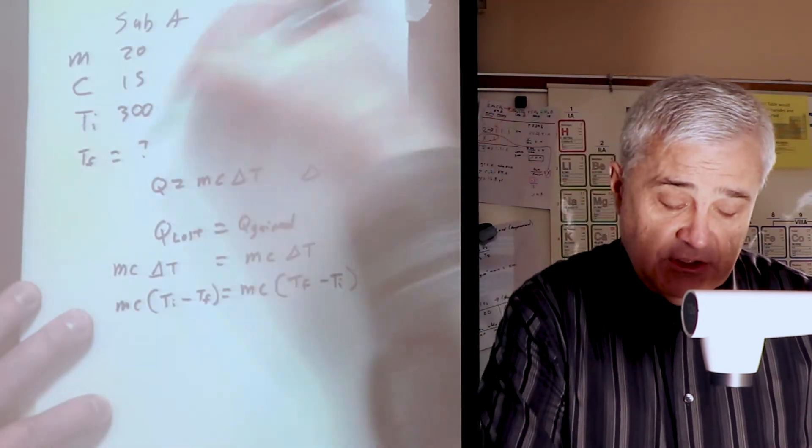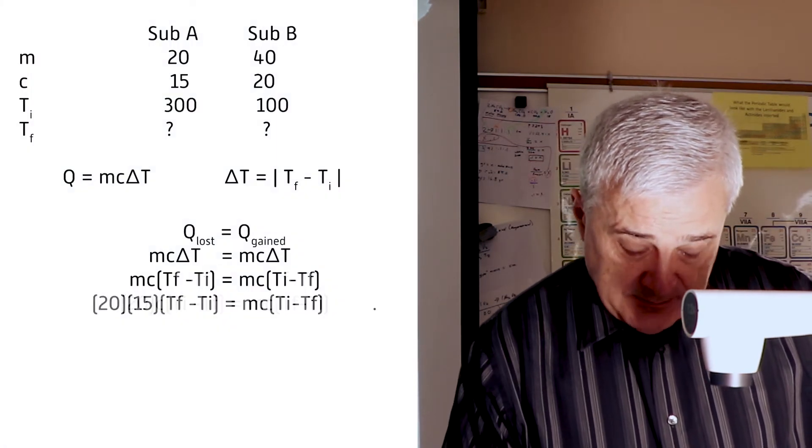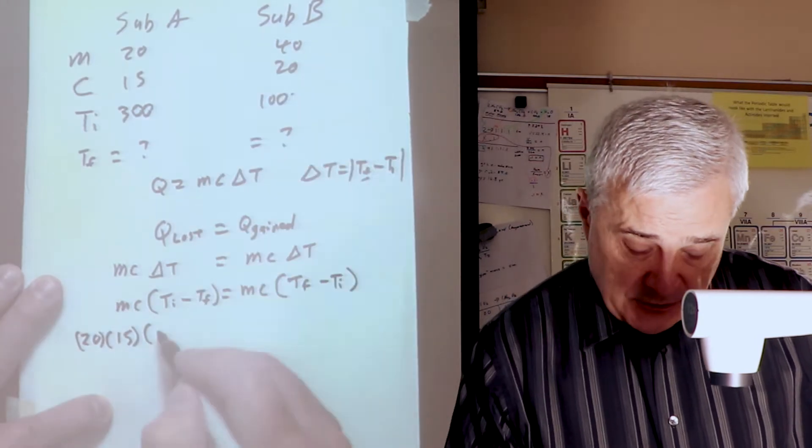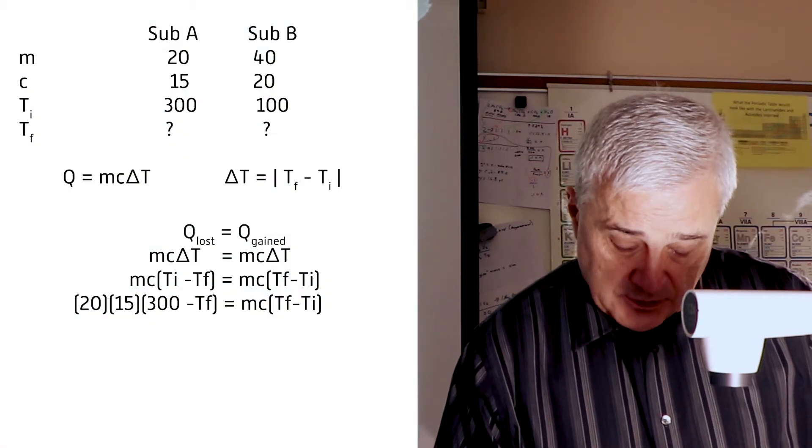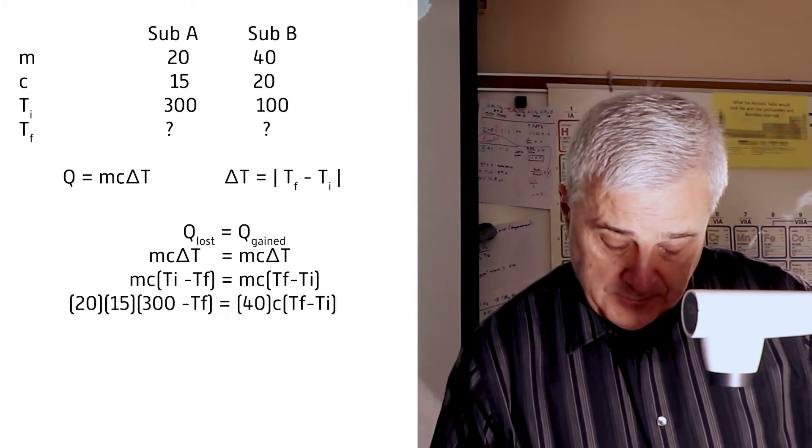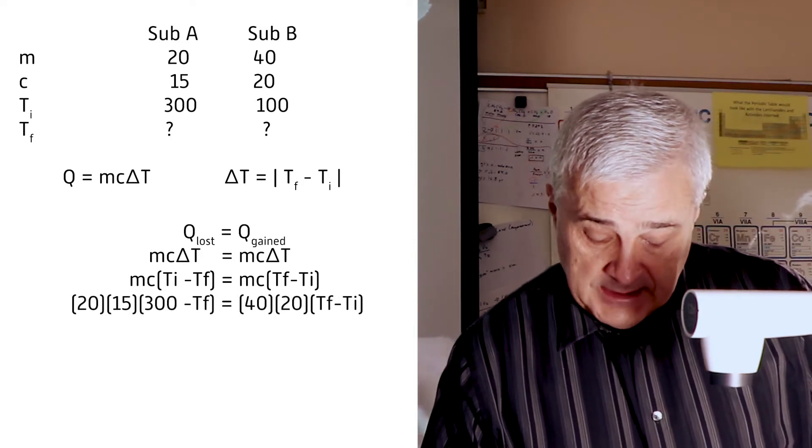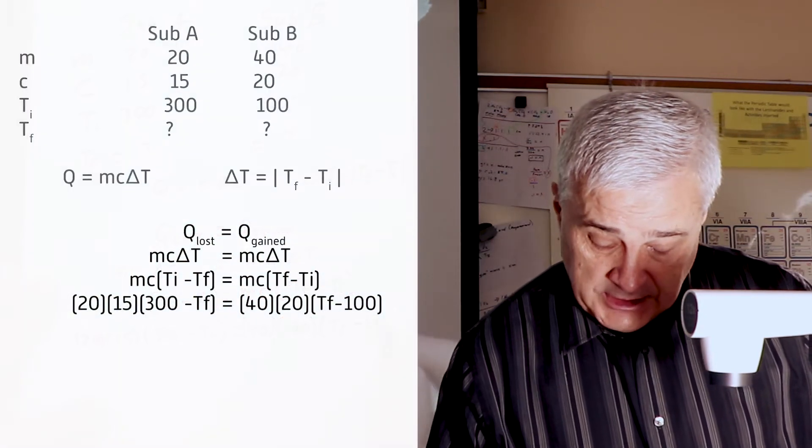Now we're going to take these numbers and plug them in. M is 20 times 15 times initial temperature 300 minus T sub F, that's what we're looking for, equals 40 times 20 times T sub F minus initial temperature 100.